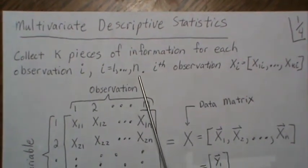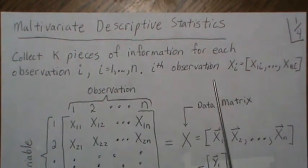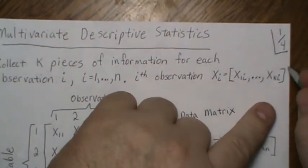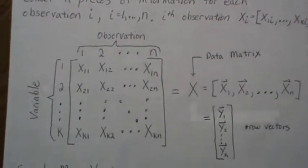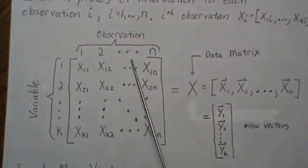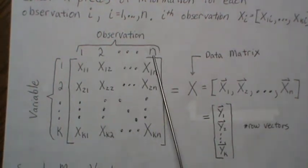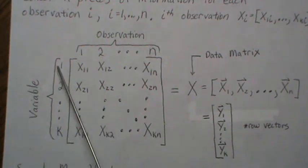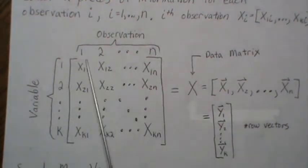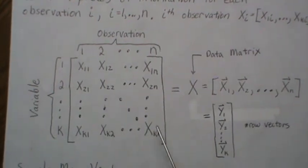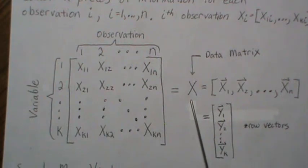We're going to collect the sample size of n observations or n patients. And so the ith observation is a k vector, a k by 1 vector. Here is the data structure, often called the data matrix. So the observations go across this way, so there's n patients or n observations. Each observation has k pieces of information collected, which we call variables — so there's k variables, n observations. And this is called the data matrix for our experiment.